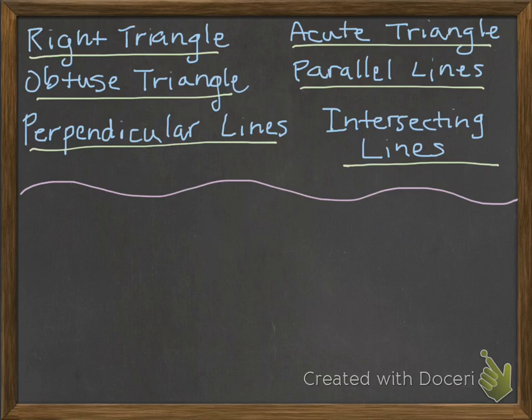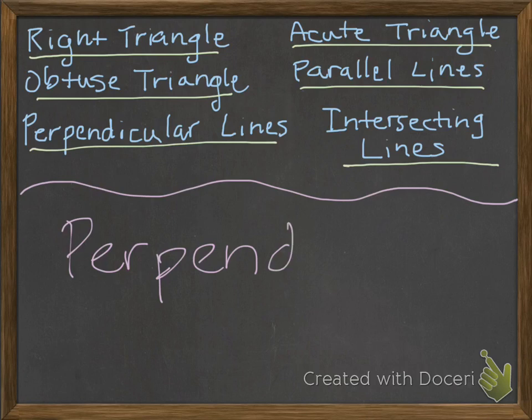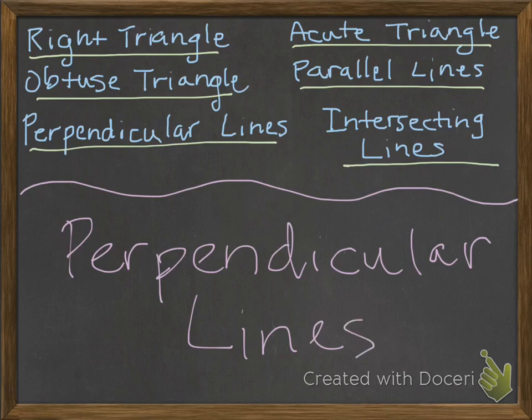Two more. How about two lines that intersect to form four right angles? If you said perpendicular lines, you are correct — four right angles.